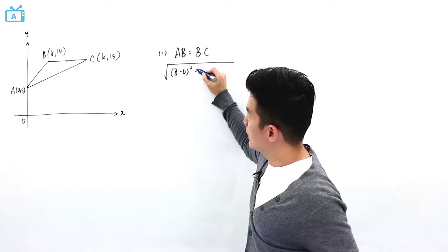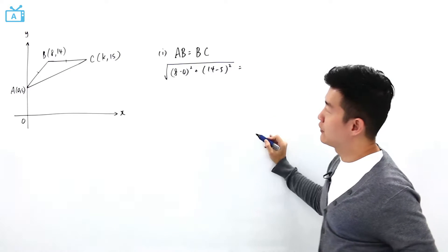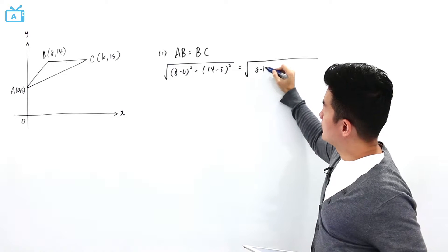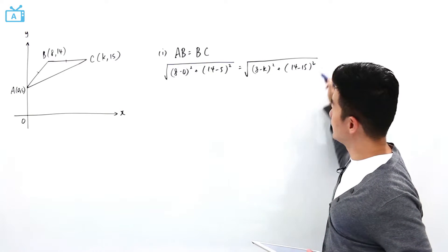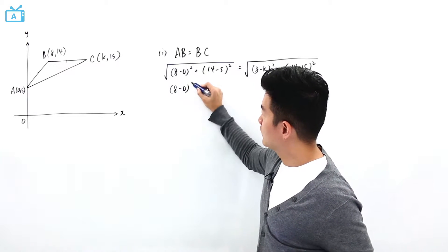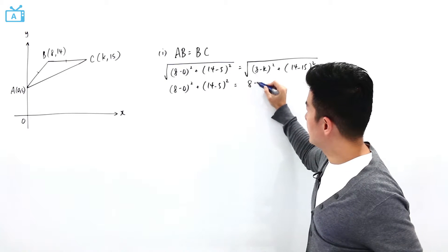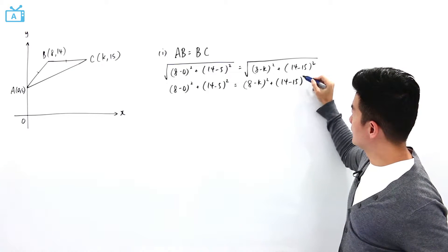8 minus 0 square plus 14 minus 5 square square root, and for BC it is the square root of 8 minus k square plus 14 minus 15 square. And we can actually remove the square root. So let me just rewrite this one more time: 14 minus 5 square, this is 8 minus k square plus 14 minus 15 square.